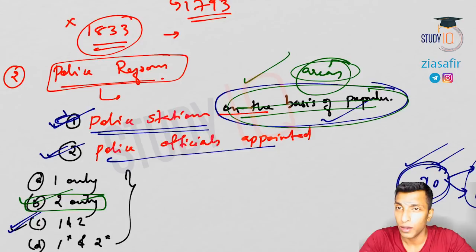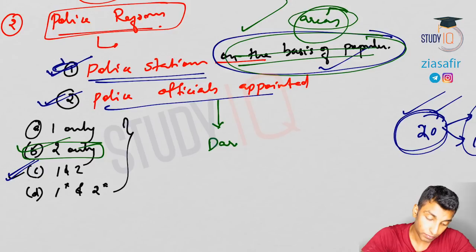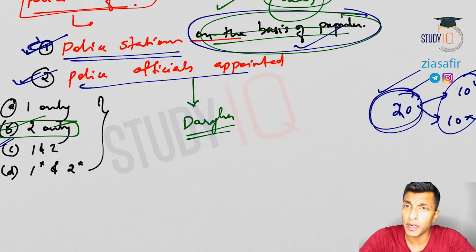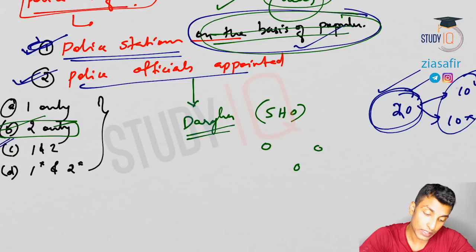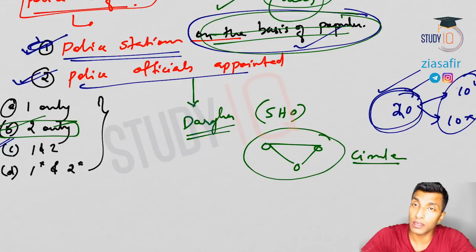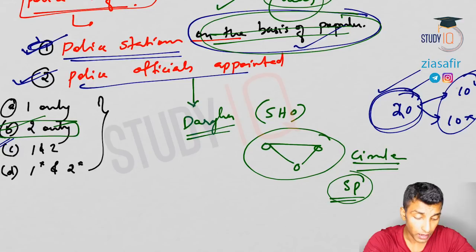The head of the police station is known as the Dharoga, essentially the SHO (Station House Officer). A number of police stations together form a circle, and the head of the circle is the Superintendent of Police. The Superintendent of Police post was also created under Lord Cornwallis's police reforms.